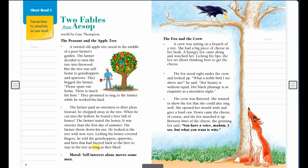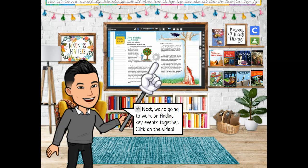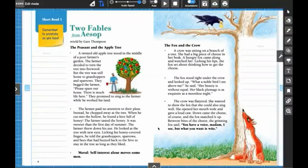Next we're going to work on finding key events together. Click on the video. Make sure you follow along. We're going to work on two fables and we are going to be looking for key events in the story. Key events are a little bit like key details. The word key means very important to our understanding of the story. So key events are the most important events in the story, and those events are the ones that are going to move the story forward.